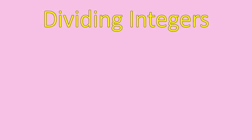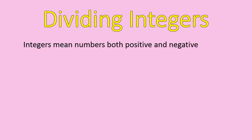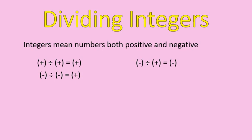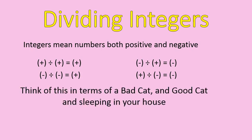Now let's look at dividing integers. Integers mean numbers, both positive and negative — we've seen that before. A positive divided by a positive gives us a positive; a negative divided by a negative — this is really looking familiar. Did I just copy and paste that entire slide? It is basically the same rule, and we're going to think of it in terms of a bad cat and a good cat.